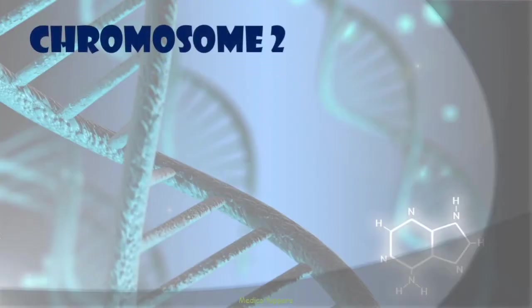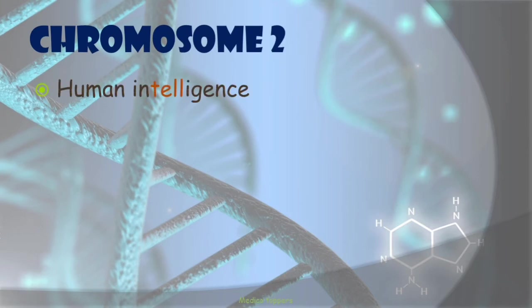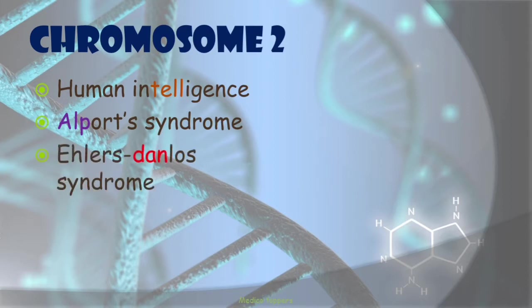Now comes chromosome 2. The genes associated mainly with human intelligence are on chromosome 2. Then comes Alport syndrome and Ehlers-Danlos syndrome.